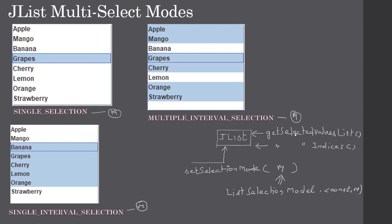getSelectedValuesList will return all the selected values. getSelectedIndices will return the selected indexes. That's all the theory — now we will modify our previous example to enable multi-selection mode.